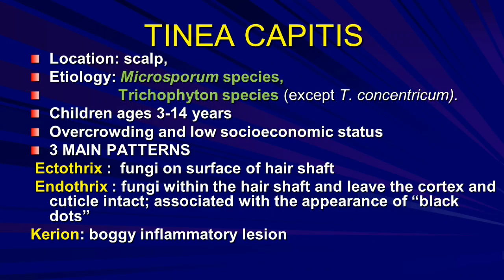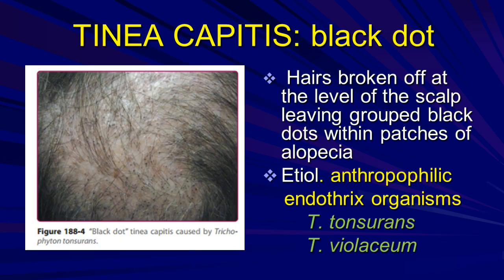Tinea capitis is located on the scalp. The etiology includes Microsporum species and Trichophyton species. The black dot pattern shows hair broken off at the level of the scalp, leaving grouped black dots within patches. This organism is Trichophyton tonsurans, an anthropophilic endothrix organism.